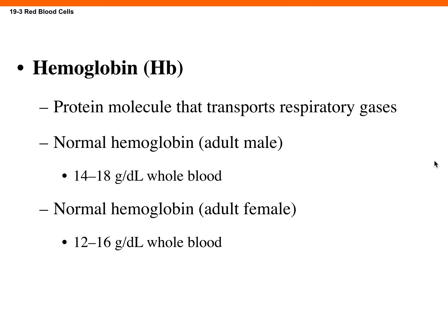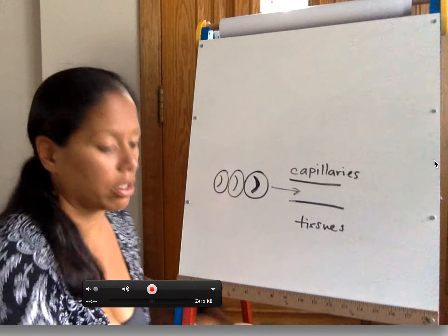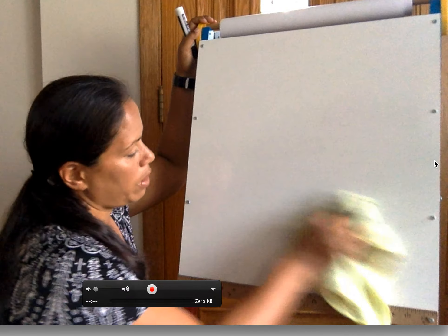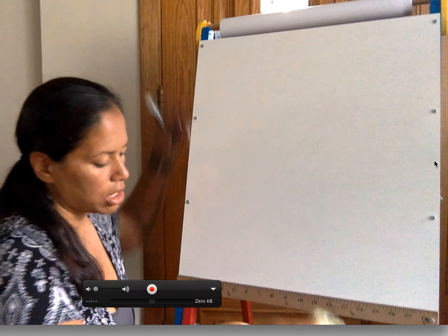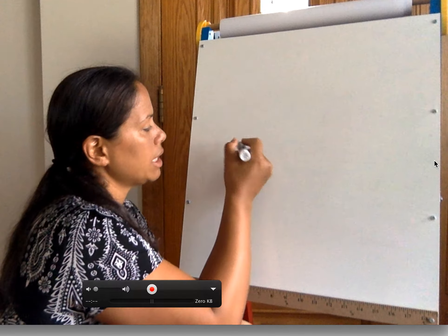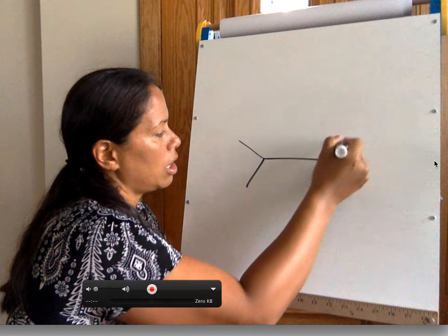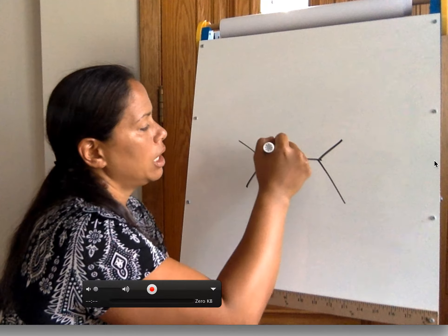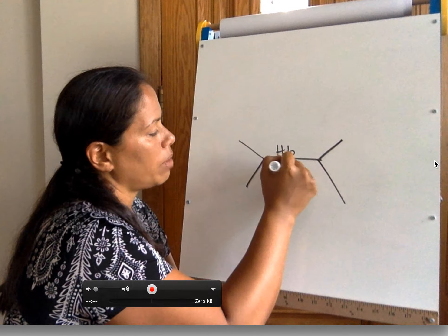Hemoglobin is the actual globin or protein that carries and transports the oxygen. Females have slightly lower hemoglobin and hematocrit values than males, and the key reason is testosterone.